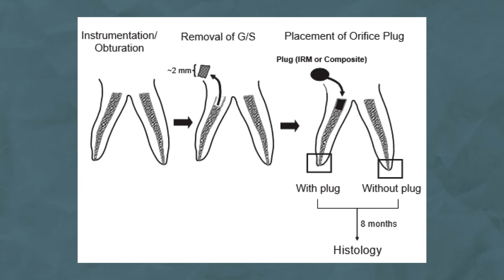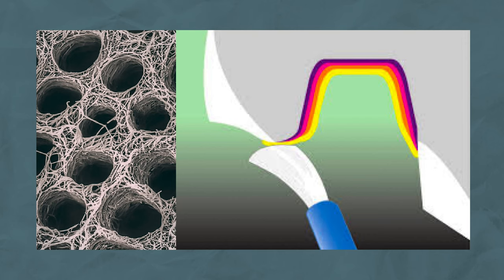However, there are a couple of ways to reduce the likelihood of microorganism invasion during temporisation. The first is to cut back the GP 2 millimetres further than where you want your post to be and fill the canal with 2 millimetres of IRM, creating an extra seal. The second is to do some immediate dentine sealing. We won't cover all the benefits of IDS today, but for those unfamiliar with it, there's great evidence-based content online and we'll leave links in the description.